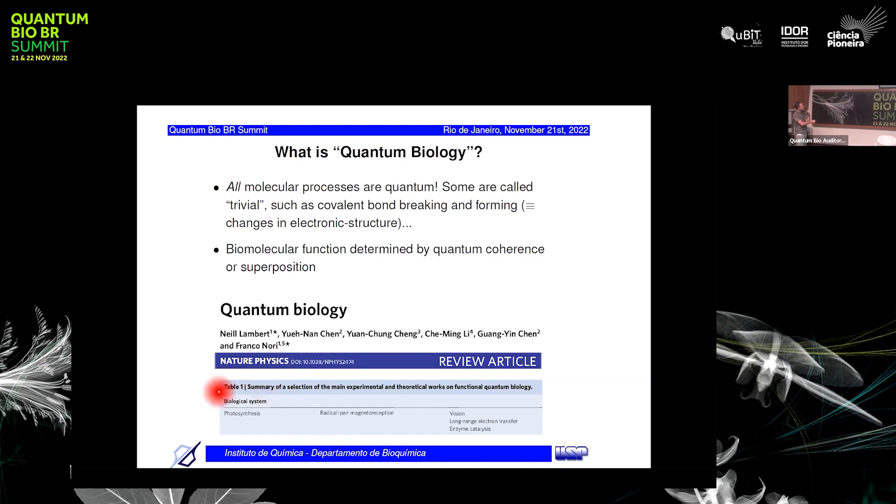There's this nice review by Nouri and collaborators years back in Nature Physics that kind of tried to establish what is quantum biology. They mentioned several biological processes where you can have quantum effects such as photosynthesis, the radical pair magnetoreception that we heard about in the previous two slides, vision, electron transfer, and enzymatic catalysis. I'll be talking more about the last two of them today.